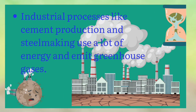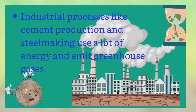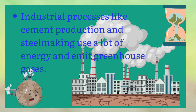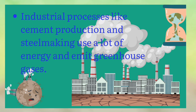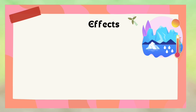Industrial processes like cement production and steel making use a lot of energy and emit greenhouse gases. Key industrial sectors such as cement, steel, and iron account for around 20% of worldwide carbon dioxide emissions.